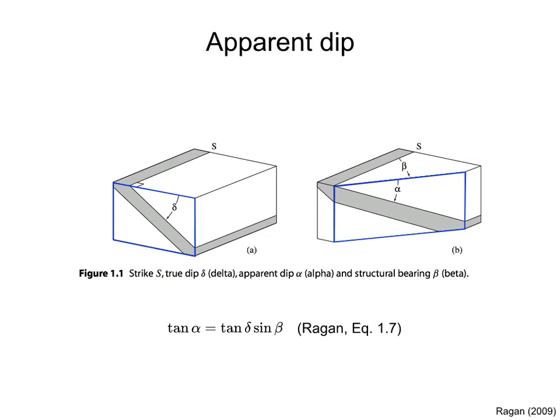The figure to the right shows the apparent dip of the plane, alpha, measured on a vertical section oblique to strike. The relationship between the true dip and the apparent dip is given by this equation. Beta is the angle that the vertical section makes with the strike. For beta = 0, which is a section parallel to the strike of the plane, alpha is 0. For beta = 90, which is a section perpendicular to strike, alpha equals delta. In other words, on a vertical section perpendicular to the strike of the plane, we will observe the true dip; on a vertical section parallel to the strike, the plane will look horizontal, regardless of its dip.